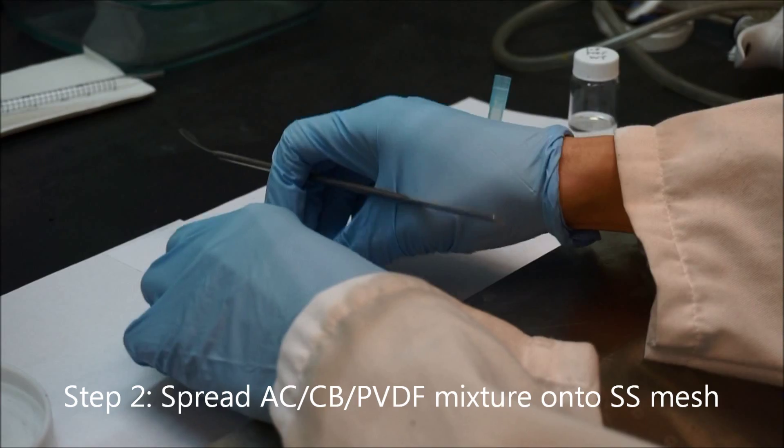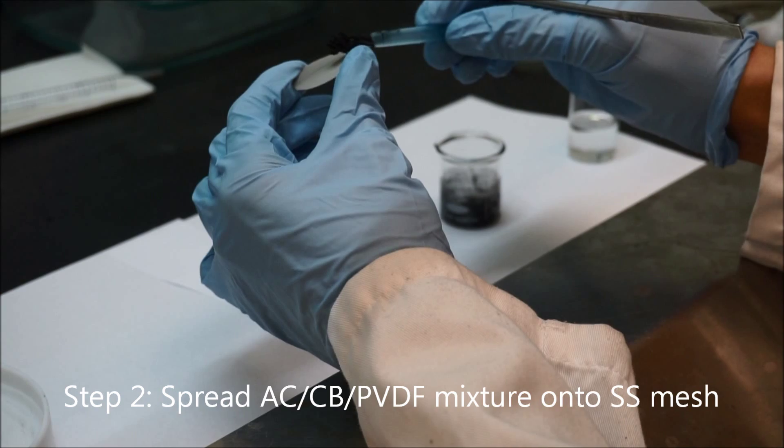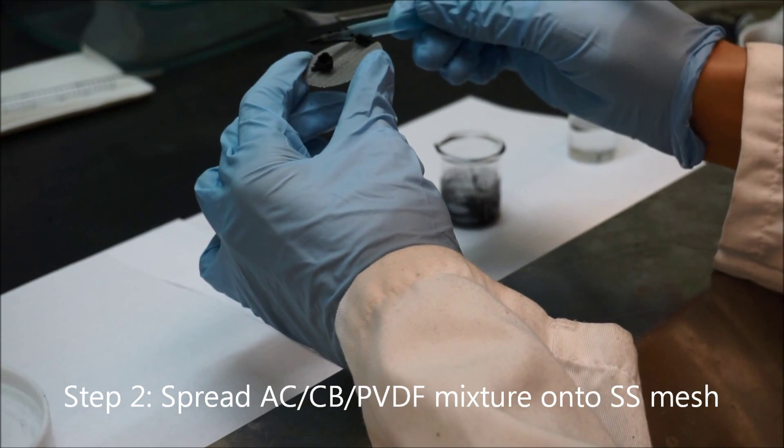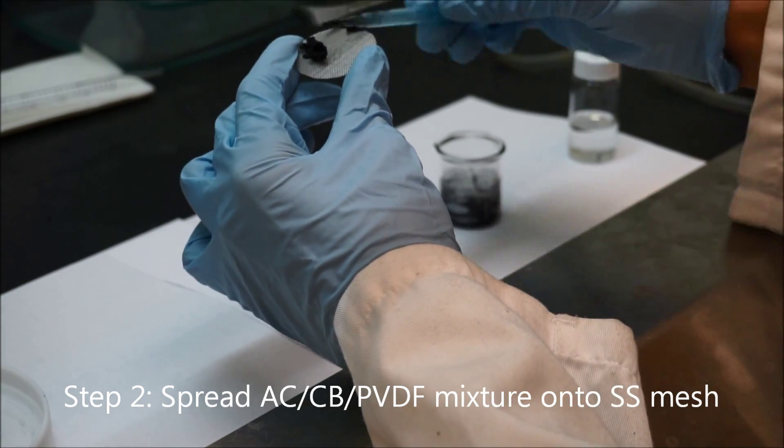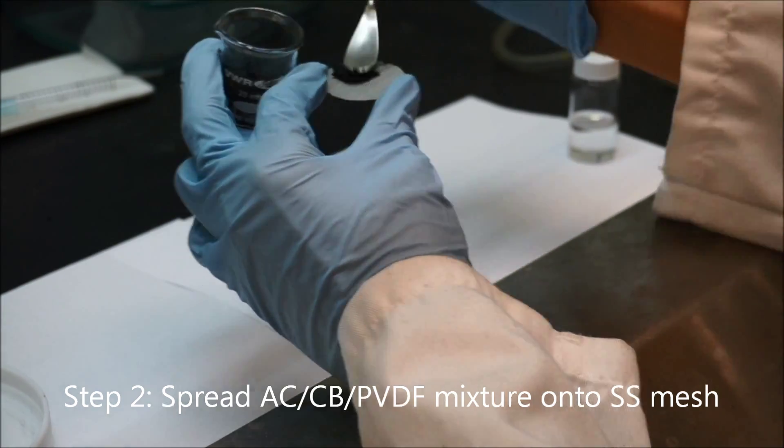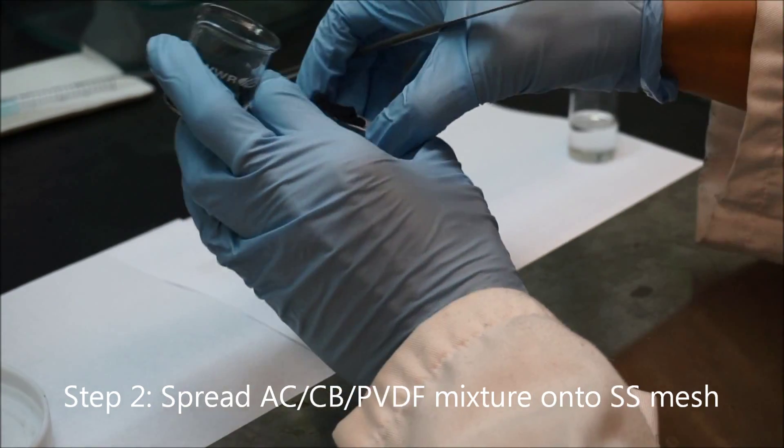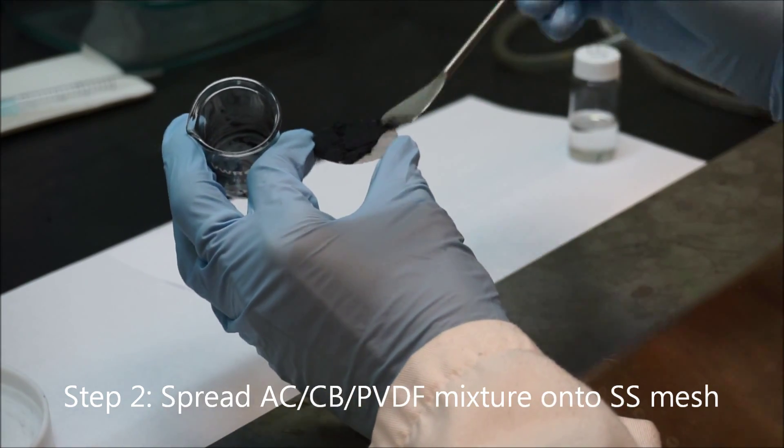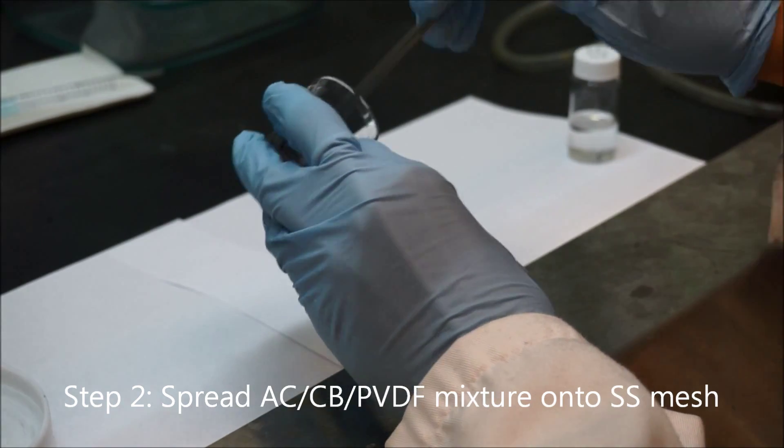Then the second step is to spread the active carbon, carbon black, PVDF mixture onto the stainless steel mesh. Here we use a spoon to quicken this process. It might take 30 seconds to 1 minute to finish this process, and it depends on how fast you can do it. Do not exceed 2 minutes to finish the process.